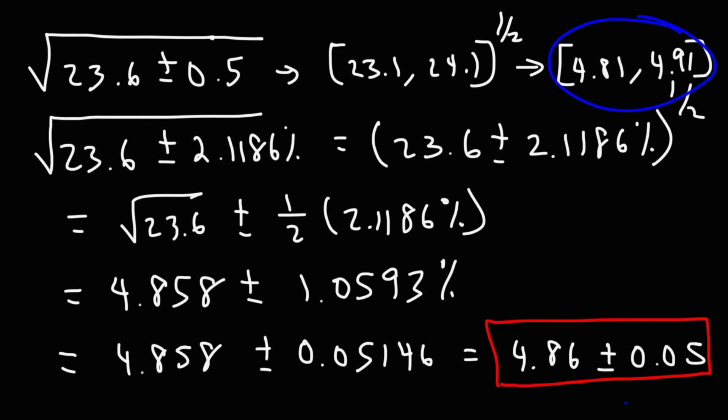Notice that it agrees with the values here. 4.86 minus 0.05 is 4.81, and 4.86 plus 0.05, if you were to plug that in, will give you 4.91. So this means that our answer that we have at the end is a fairly accurate answer.